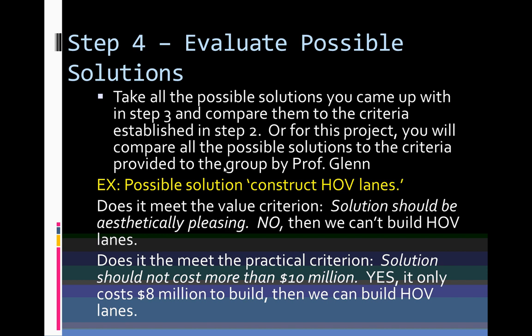For example, if we were looking for a house and had established that it should cost less than $200,000 and should have three bedrooms, then when we go look at four homes, we could take each house and compare it to the criteria we set up ahead of time — and hopefully pick the house that meets the majority of the criteria.